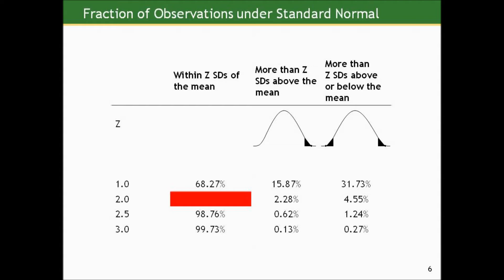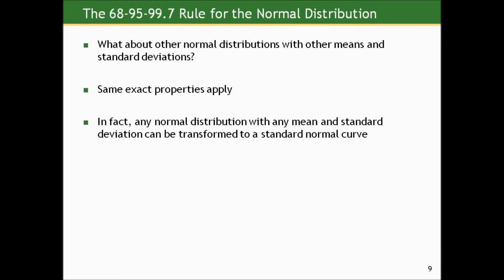Two standard deviations cuts off 95% in the middle and leaves two tails, each of which is about 2.5%, and the two tails together complete the rest of the 5% under the curve. Now, there are an infinite number of normal distributions, but the same exact properties apply to all of them — this is what defines a normal distribution. Any normal curve with any mean and any standard deviation is such that going two standard deviations from the mean captures 95%. And you don't need an infinite number of tables because any normal distribution can be transformed to a standard normal curve.